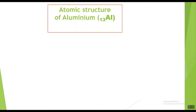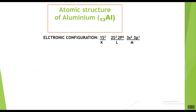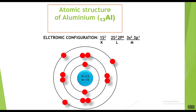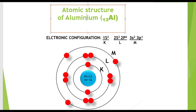Now aluminium. The symbol for aluminium is Al with atomic number 13, showing it has thirteen electrons. The electronic configuration of aluminium is 1s2 2s2 2p6 3s2 3p1, showing two electrons in the K shell, eight electrons in the L shell, and three electrons in the M shell. The atomic structure of aluminium shows thirteen protons and fourteen neutrons in the nucleus, with thirteen electrons around the nucleus: two in the K shell, eight in the L shell, and three in the M shell.